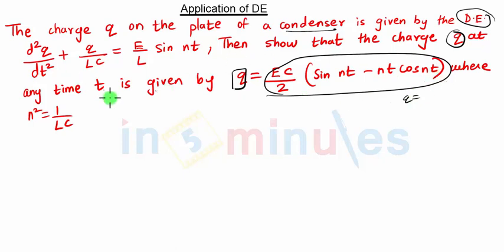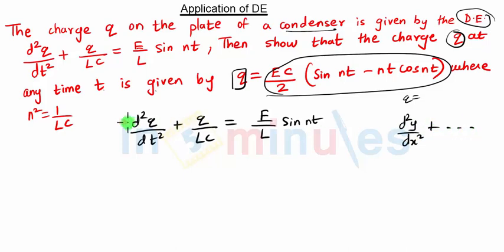So we write this equation d²q/dt² + q/LC = E/L sin(nt). In our equation we used to have d²y/dx² plus some constant. So here we have d²q/dt². So our y is replaced by q and our x is replaced by t. Remember this.